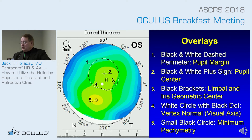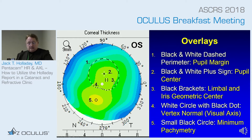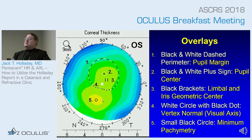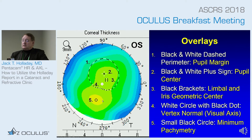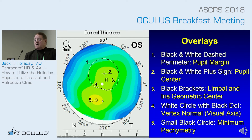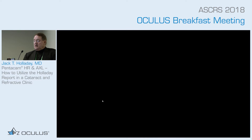The fourth overlay is a little white circle with a black dot in the middle — that is the vertex normal, or visual axis. The fifth is a small black circle at the bottom, which is the thinnest part of the cornea: the pachymetry minimum. So those five overlays are the pupillary margin, pupil center, center of the limbus, vertex normal or visual axis, and the pachymetry minimum location.